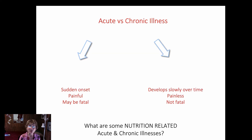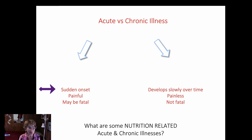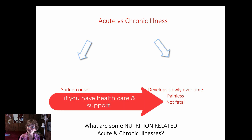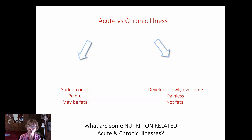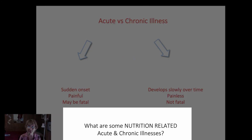I want to talk about acute versus chronic illnesses with respect to nutrition. Acute illnesses come on suddenly, are often painful, and may be fatal. Chronic illnesses develop slowly over time, are generally painless, and are not fatal. Think about what are some nutrition-related acute and chronic illnesses.